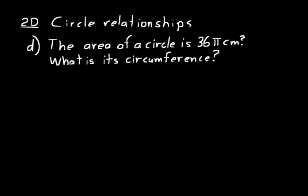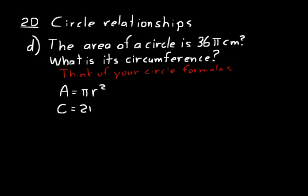Now let's look at the last part of this lesson: circle relationships. The best way to understand this is through practice problems. Practice problem D says the area of a circle is 36 pi centimeters squared — what is its circumference? When you see these problems, think of the formulas involved. The area of a circle equals pi times the radius squared. The circumference equals 2 times pi times the radius. So set the area formula equal to the given value: pi r squared equals 36 pi.